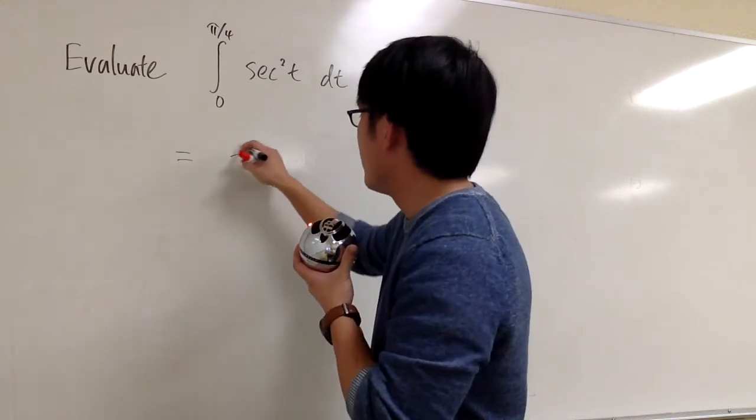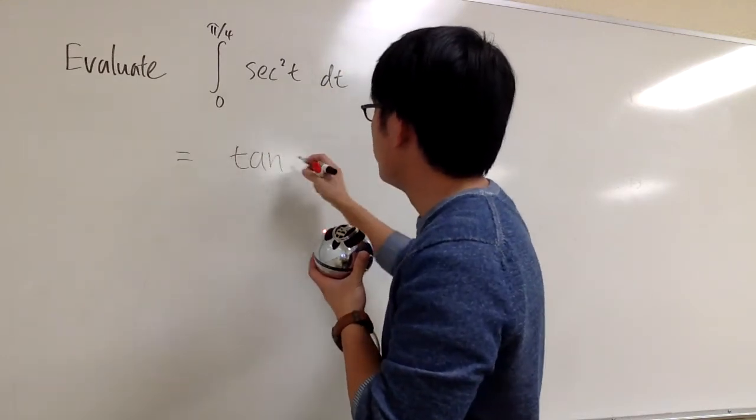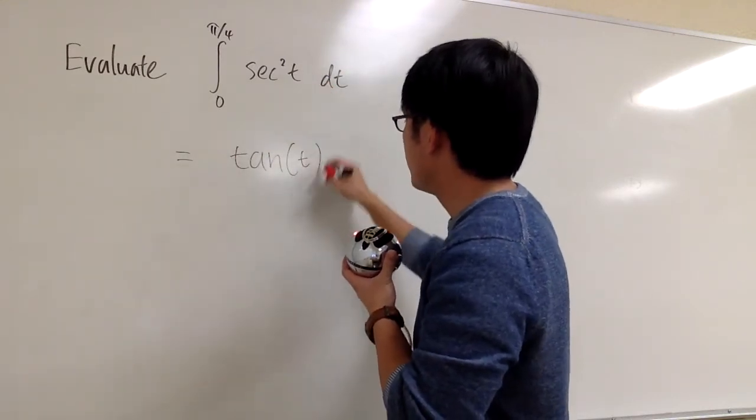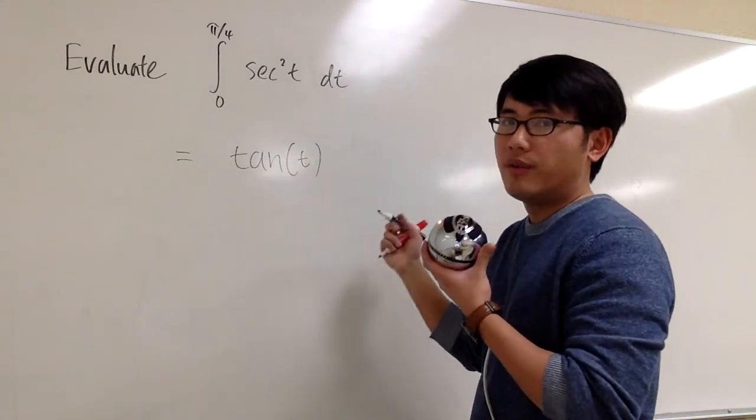So in this case, you know the antiderivative of that will be tangent, and the variable that we're using is t. So tangent t for the antiderivative.